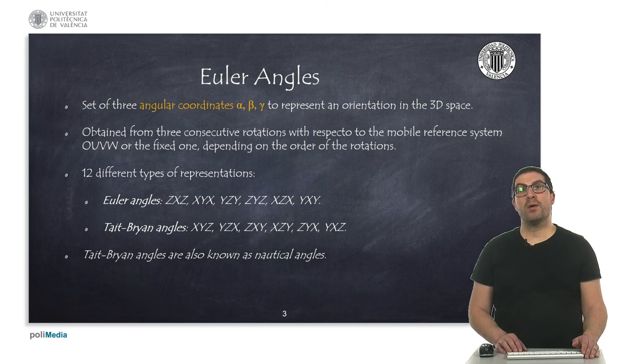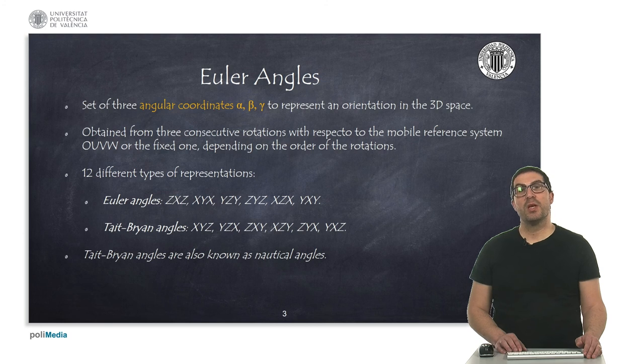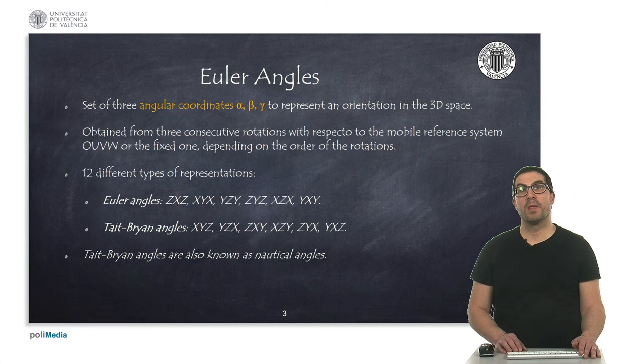Euler angles define a 3D orientation by using three angular coordinates, and with these three angular coordinates we have up to 12 different types of representations. The letters used in this representation read from left to right imply consecutive rotations on the mobile reference system. We can distinguish between a set of representations that apply a first and last rotation on the same axis, known as proper Euler angles,